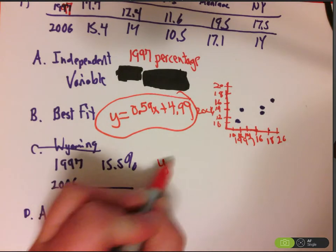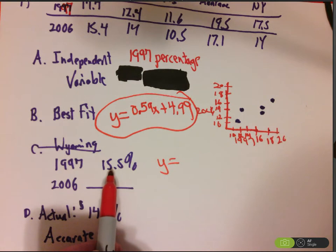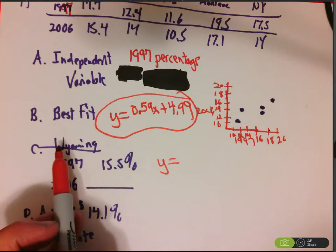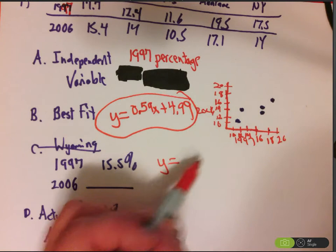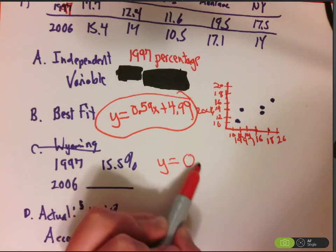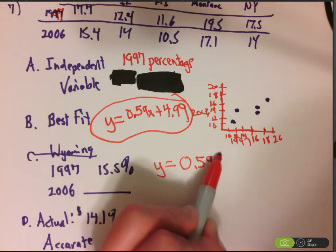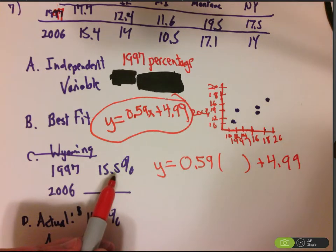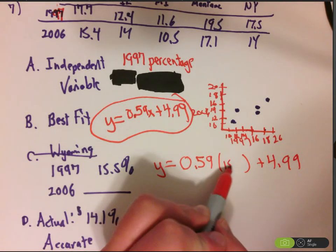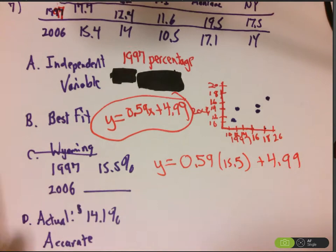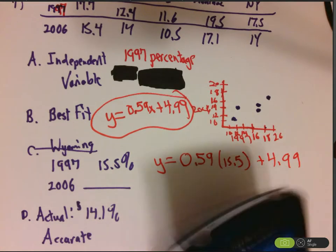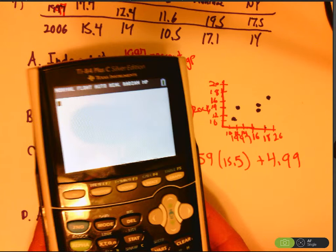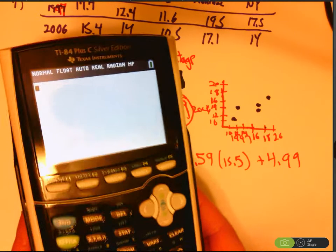So essentially, they give me the x value of 15.5%, which was the percentage of uninsured people in Wyoming in 1997. So I'm going to use the line of best fit as a tool. And what I'm going to do with it is plug in that 15.5%. I'm going to convert it from a percent to just a regular number. And it should give me the Wyoming 2006 percentage based off of the data that we've already been given.